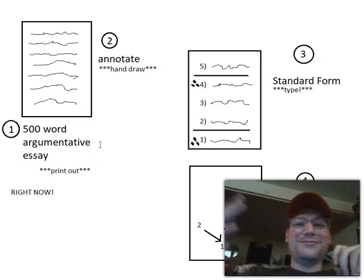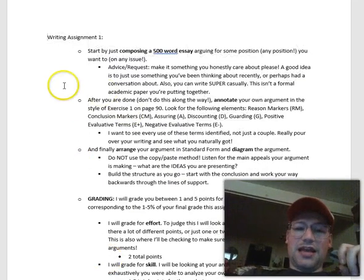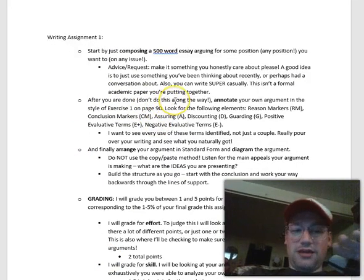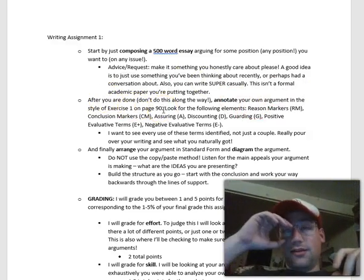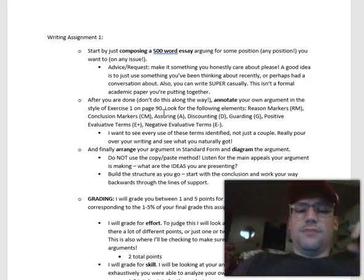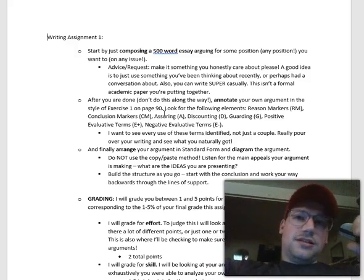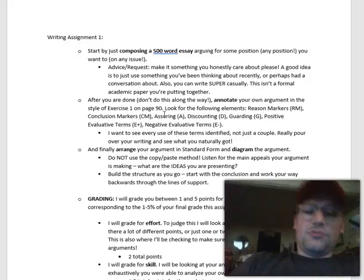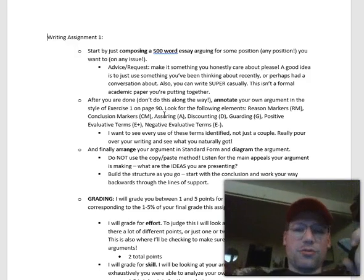This annotation task, which on the writing guide here you can see, after you're done with this, don't do this along the way. Just write the essay first. Go back over it, annotating your own argument in the style of exercise one on page 90. This is taken from the eighth edition of the book.